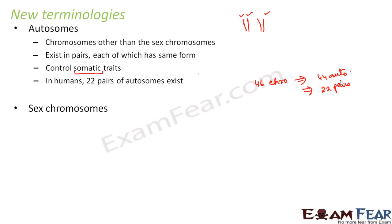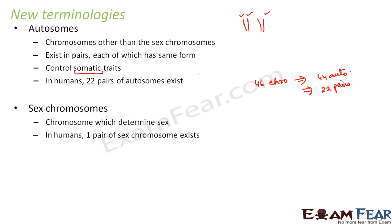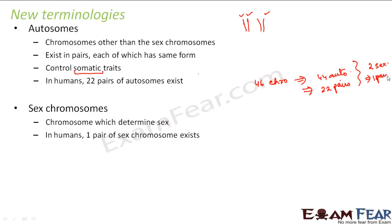The other type is sex chromosomes. These chromosomes determine the sex of an individual — that is, whether the individual is male or female. In humans, one pair of sex chromosomes exists. Out of 46 chromosomes, 44 are autosomes, so the remaining two are sex chromosomes, also existing as one pair.